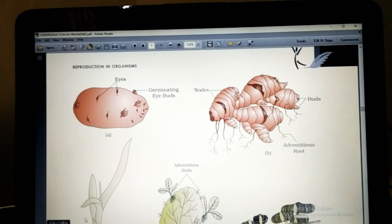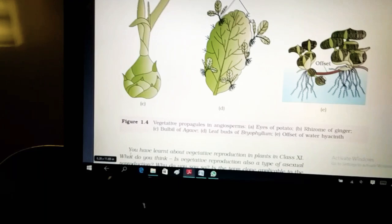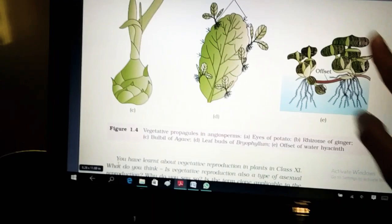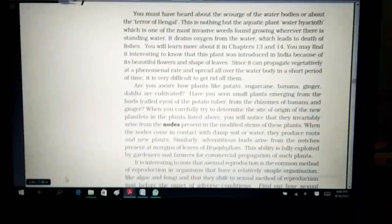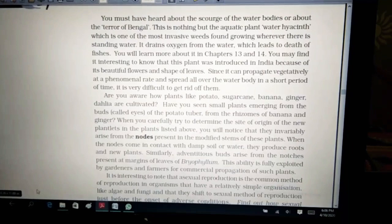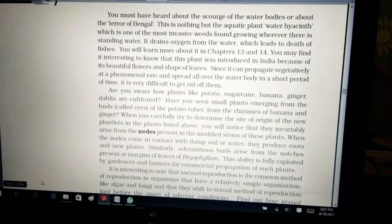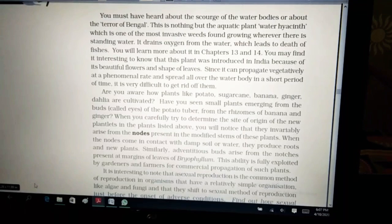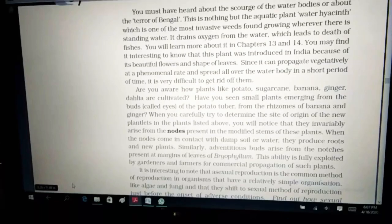Here, the eyes of the germinating potatoes, these are very common in our houses. Here is the ginger. There is the bulb. And there is bryophyllum. This is very common and a question can come, how does bryophyllum reproduce? And these are offsprings of hyacinth that is found in water. You must have heard about the scourge of water bodies or about the terror of Bengal. This is nothing but the aquatic plant water hyacinth, which is one of the most invasive weeds found growing wherever there is standing water. It drains oxygen from the water which leads to the death of fishes. You may find it interesting to know that this plant was introduced in India because of its beautiful flowers and shape of flowers. Since it can propagate vegetatively at a phenomenal rate and spread all over the water body, in a short period of time, it was very difficult to get rid of them.